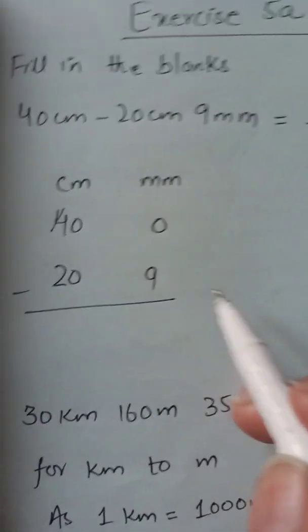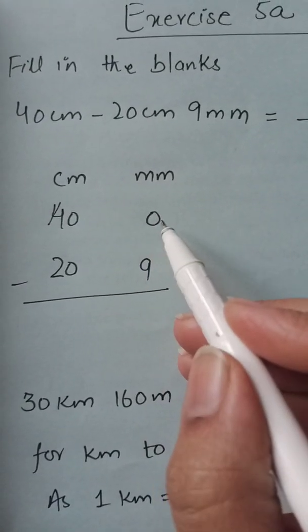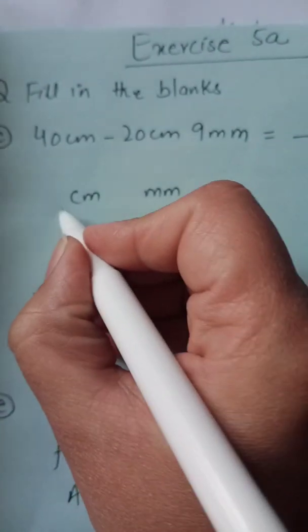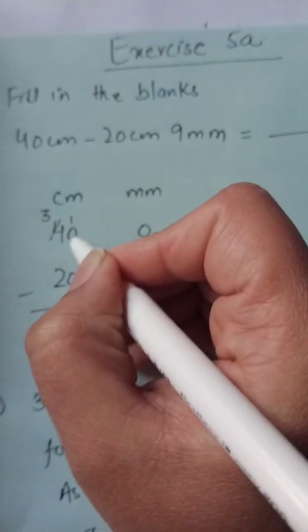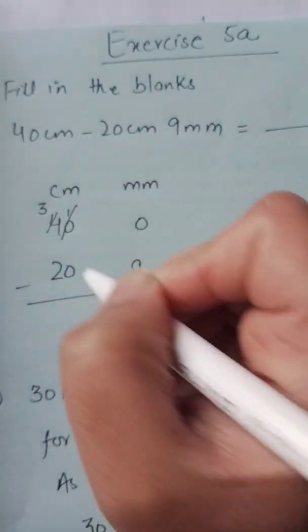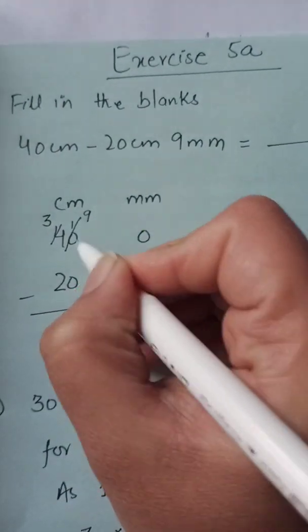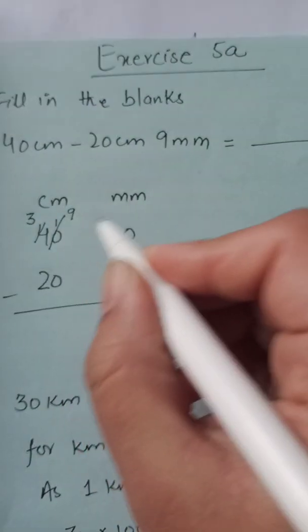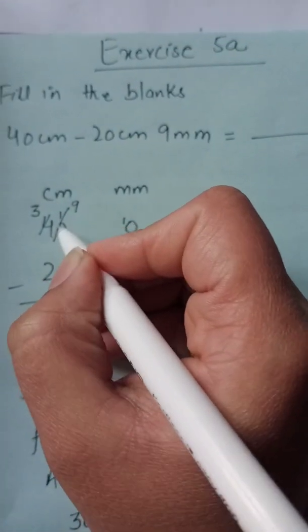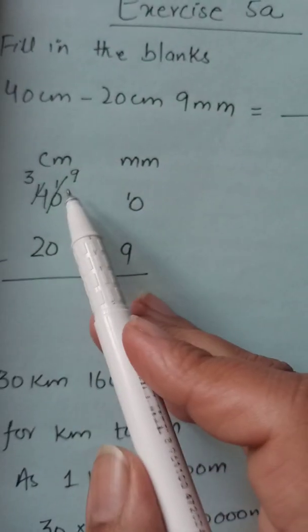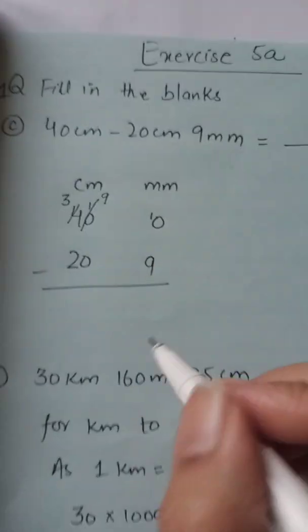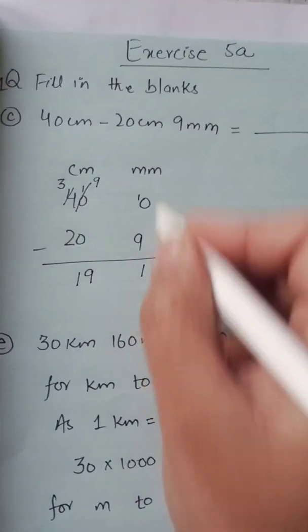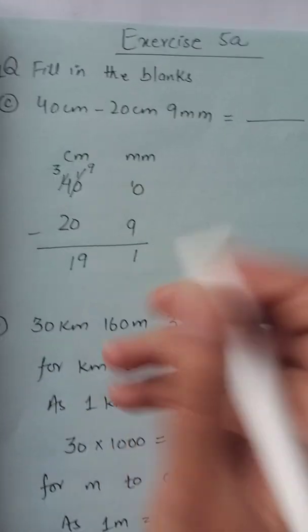Now we subtract. Nine cannot be subtracted from zero, so we borrow from the next column. That column also has zero, so we borrow from the next: 4 becomes 3, and zero becomes ten. That ten lends to the previous column, making it nine. Then ten minus nine = 1, nine minus zero = 9, three minus two = 1. Result: 19 centimeters 1 millimeter, which equals 191 millimeters.